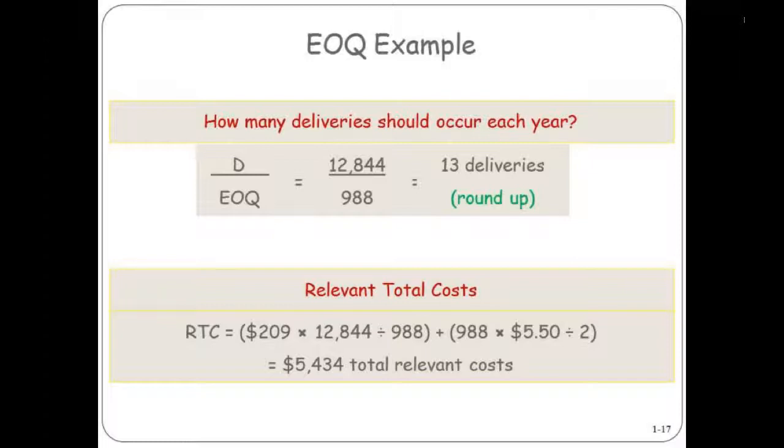You can try any other order quantity, and you should find that at any other level, these total costs would be higher. This is the minimum possible total costs for the year.